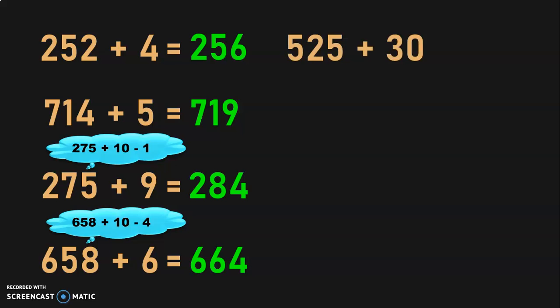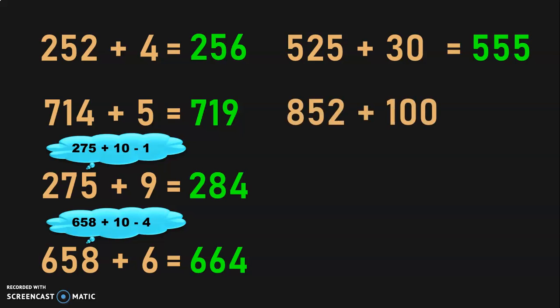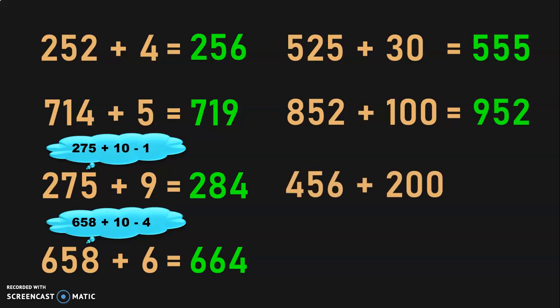Now, to add 525 plus 30, this is a straight addition. Once you know skip counting by 10, this becomes easy. After 525: 535, 545, 555. These are all mental math sums which the children can do very quickly. 852 plus 100 gives you 952. 456 plus 200 gives you 556, then 656, because we are adding 200 in this case.